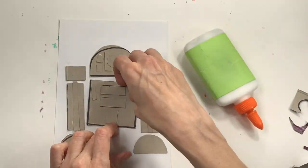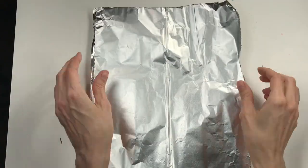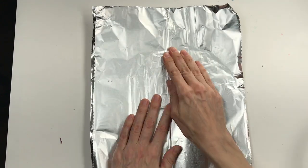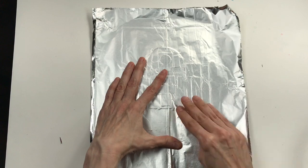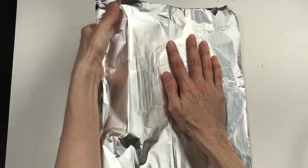Once you've got everything glued down, you might want to let it dry for a couple of minutes before you move on to this next step. Now place a sheet of aluminum foil over your creation and begin to massage the foil until you can see your design show up underneath.